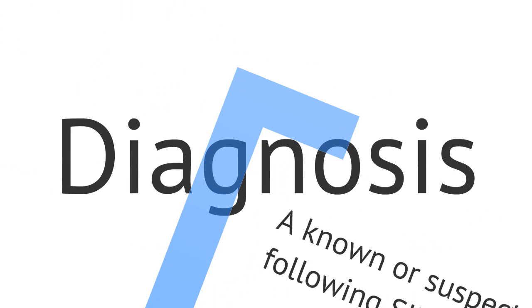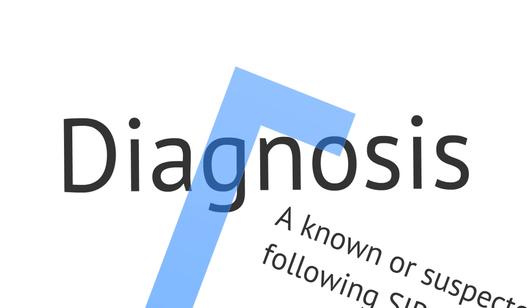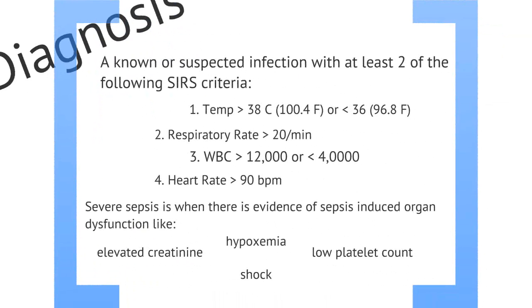Like with any diagnosis, sepsis has specific criteria that must be met to qualify a patient with the diagnosis of sepsis. The patient must have a known or suspected infection with at least two of the following SIRS criteria: temperature greater than 38°C or less than 36°C, respiratory rate greater than 20, white count greater than 12,000 or less than 4,000, and heart rate greater than 90 beats per minute.